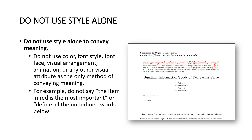Do not use style alone — such as italics, highlighting, or font color changes — as the only method of conveying meaning. Do not just say 'the item in red is the most important' or 'define all the underlined words,' because screen reading software for people with visual impairments may not pick up on colored font. Instead, be very specific and say, for example, 'these are the key points in this slide.'